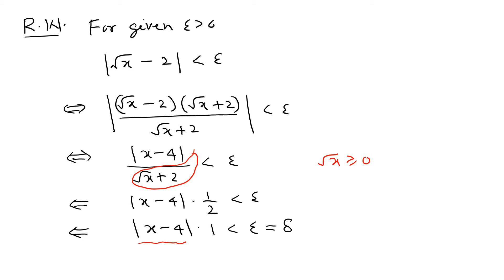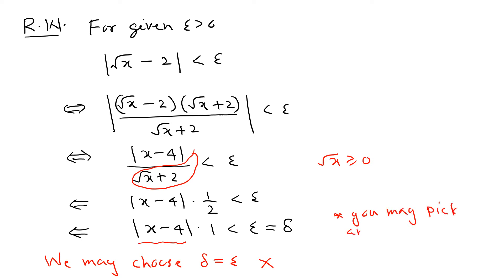But this is wrong — you cannot do that. In a regular form, I have seen this everywhere: it looks like we may choose delta equal to epsilon. But this is not true. In theory, you could also pick any smaller value, like delta equal to epsilon over 2, and that also seems to work. But all of these choices are wrong, and we're going to look at the reason now.